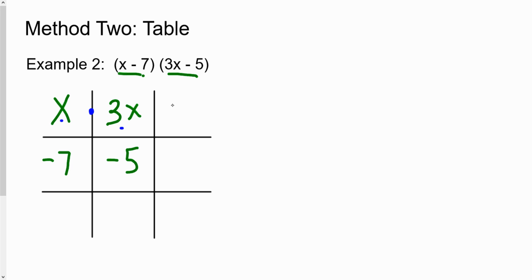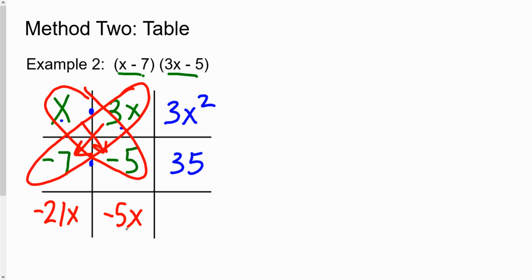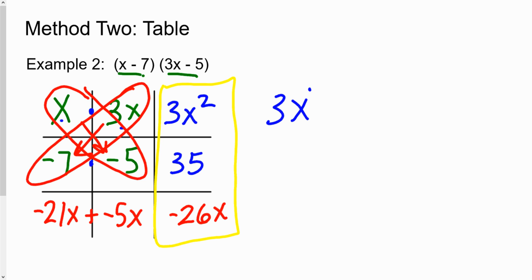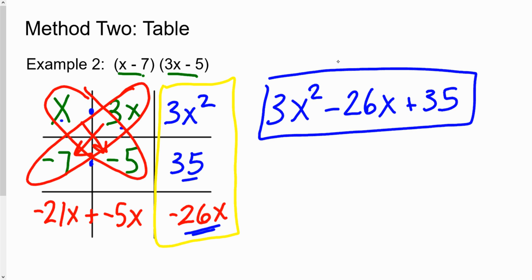To find the first term, multiply x times three x to get three x squared. In the next row, multiply negative seven times negative five to get positive 35. The tricky part is the cross multiplication: three x times negative seven is negative 21x, and x times negative five is negative 5x. Those two terms add together — negative 21 plus negative 5 is negative 26x. Reading the last column in standard form gives three x squared minus 26x plus 35. That's the table method.